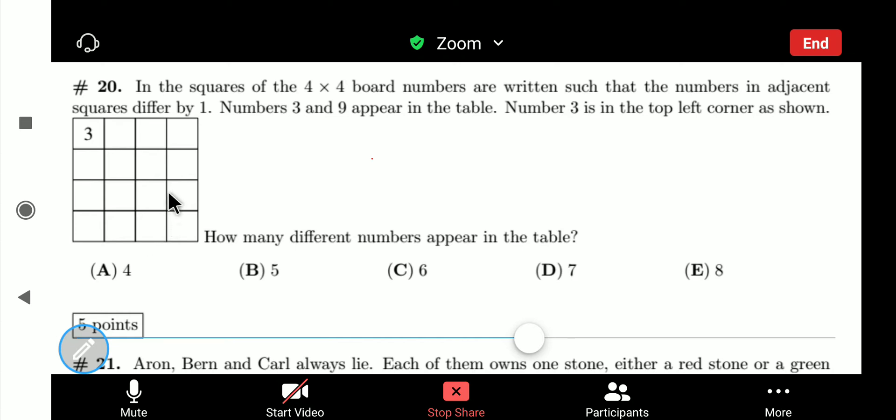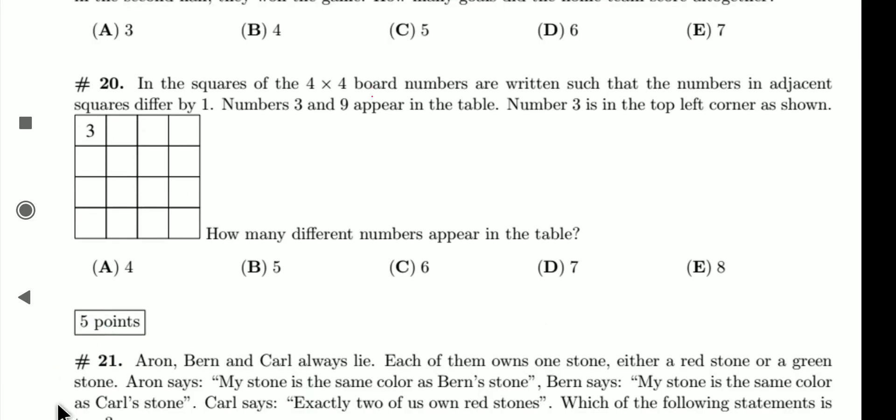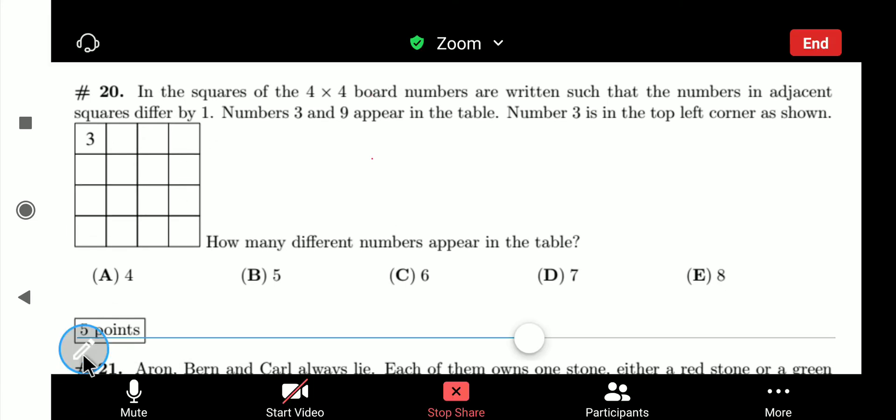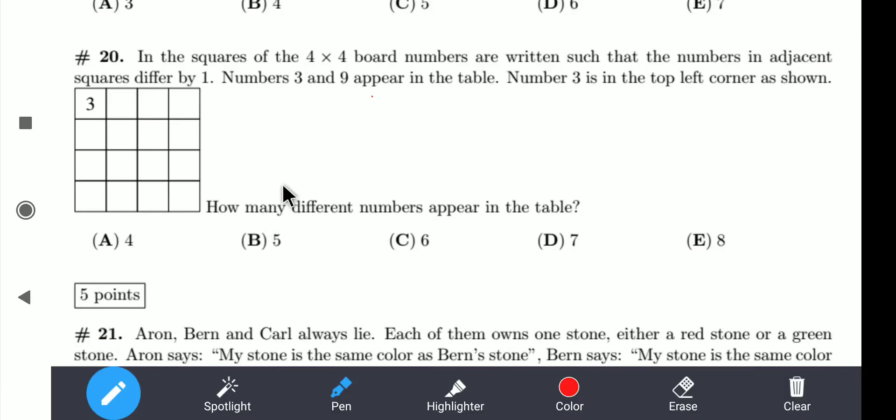Let's read the question. The question says, in the squares of the 4x4 board numbers are written such that the numbers in adjacent squares differ by 1. Numbers 3 and 9 appear in the table. Number 3 is in the top left corner as shown.